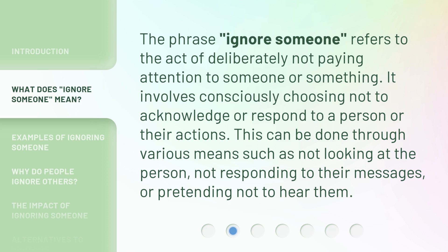The phrase 'Ignore Someone' refers to the act of deliberately not paying attention to someone or something. It involves consciously choosing not to acknowledge or respond to a person or their actions. This can be done through various means such as not looking at the person, not responding to their messages, or pretending not to hear them.